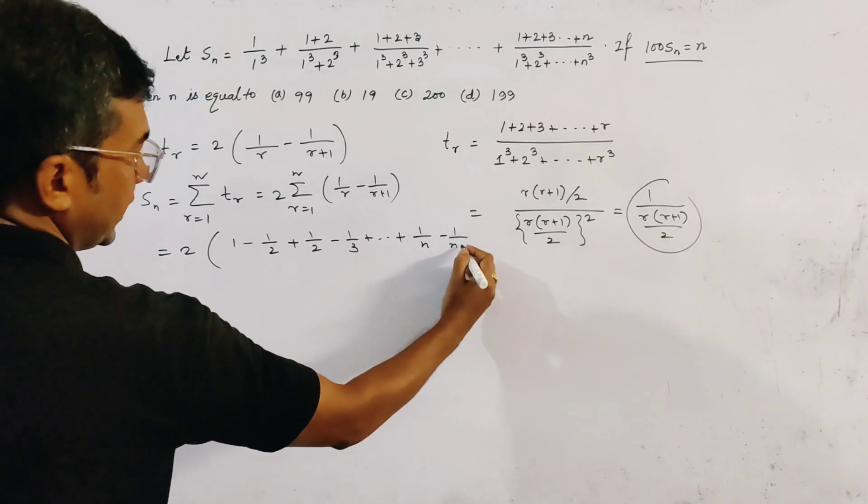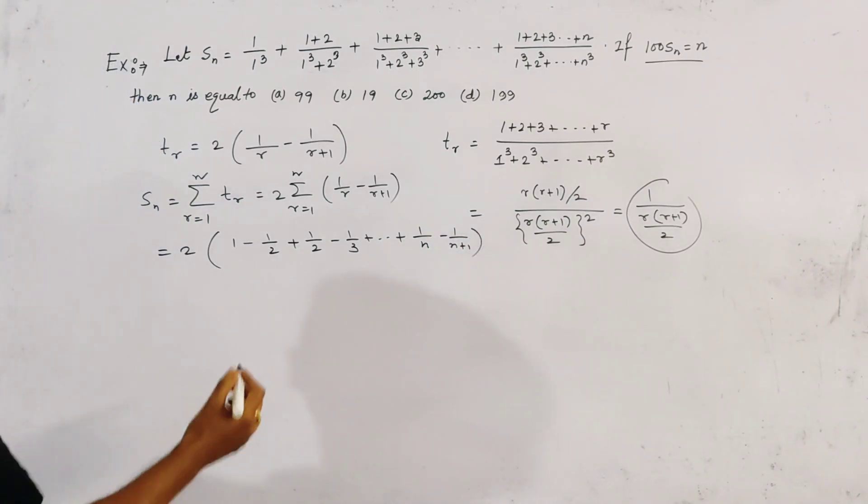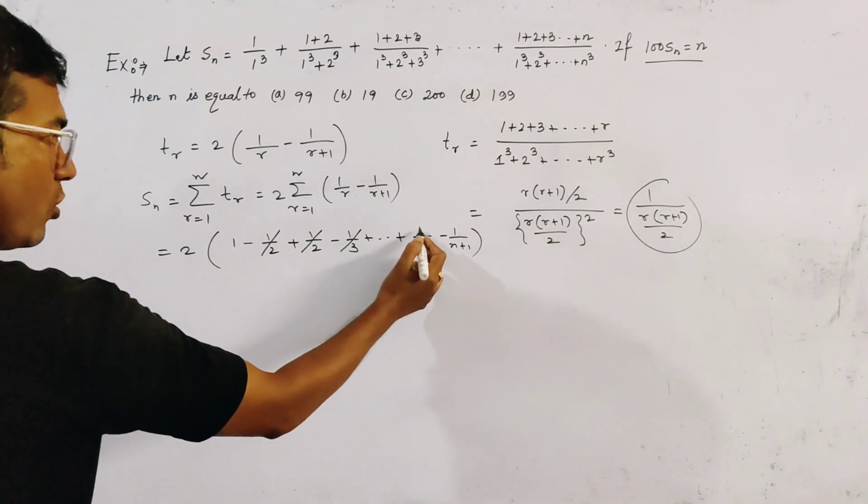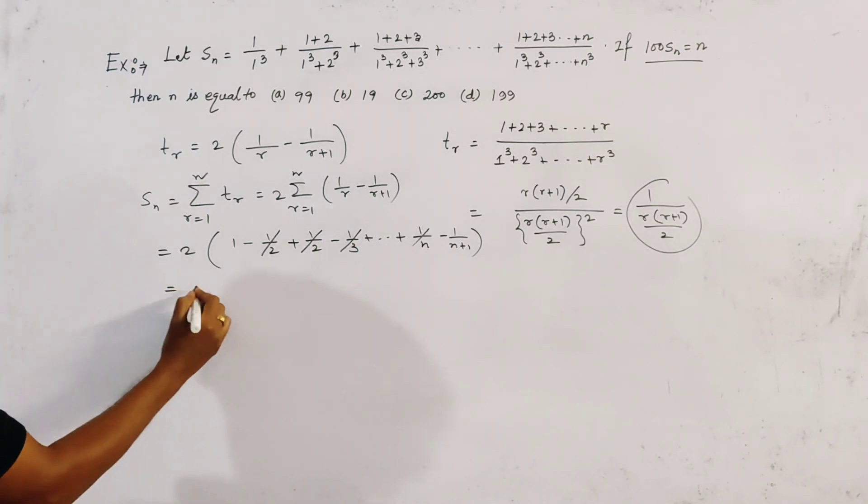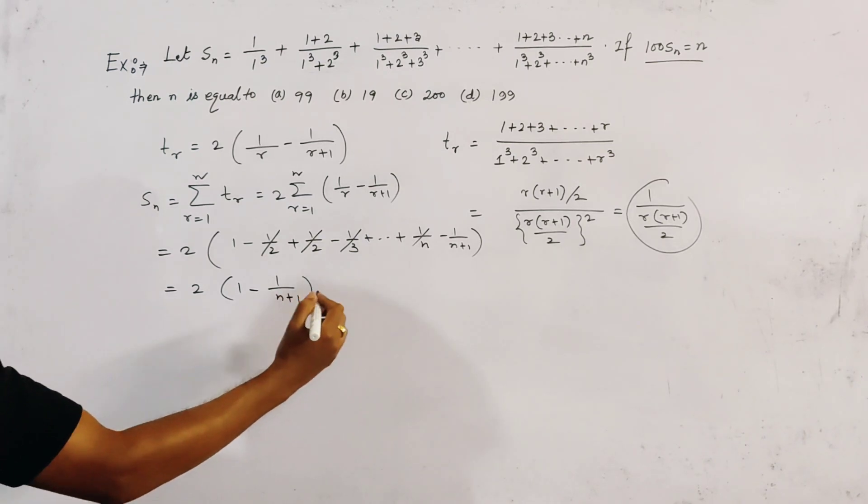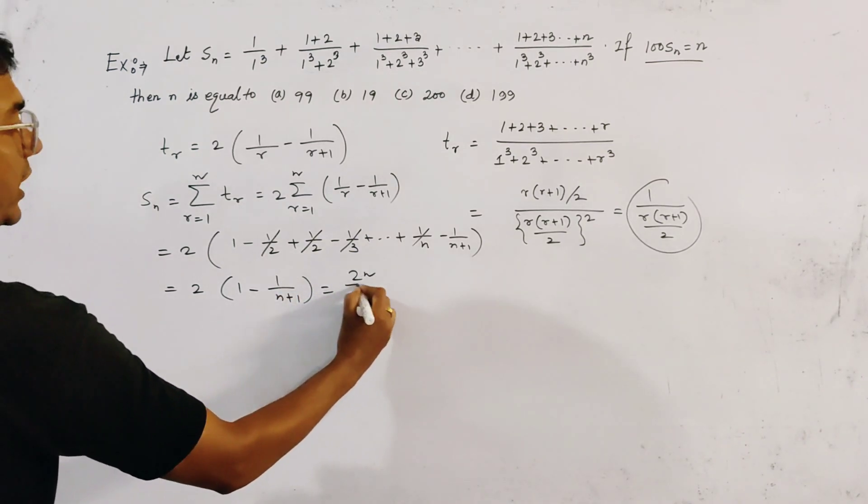It is clear that these terms all cancel out. There are two terms left: only 1 minus 1/(n+1), and this is given by 2n/(n+1). This is Sn.